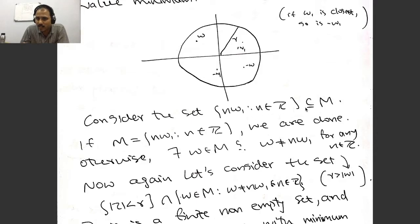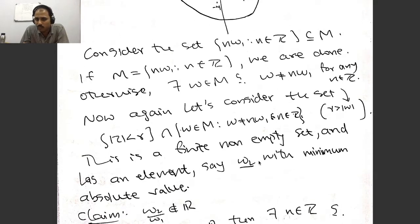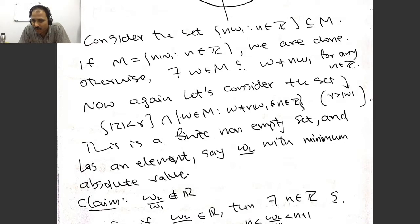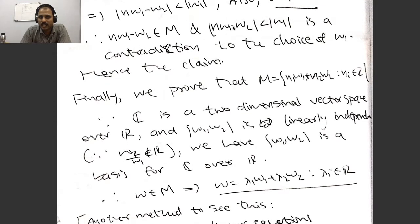The set {nω₁ : n ∈ ℤ} is a subset of M. If M equals this, we are done. Otherwise, there exists some ω in M not equal to any integer multiple of ω₁. Among those elements, choose ω₂ of minimum absolute value. The claim is that ω₂/ω₁ does not belong to ℝ: if it were real, it would lie strictly between two integers n and n+1, and this would lead to a contradiction that |nω₁ - ω₂| < |ω₁|, contradicting the minimality of ω₁.